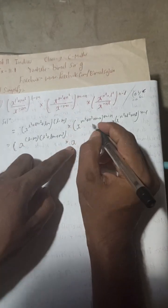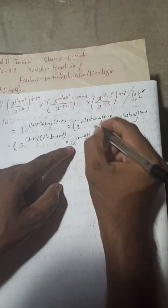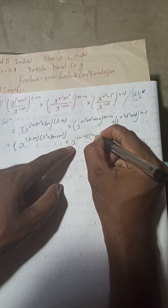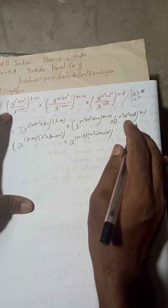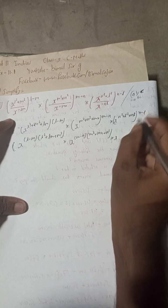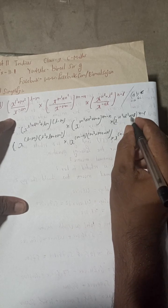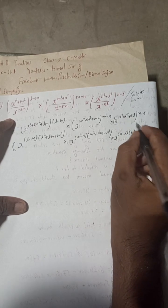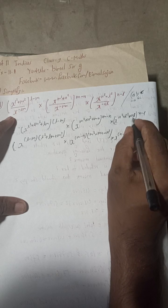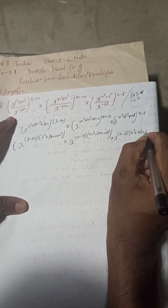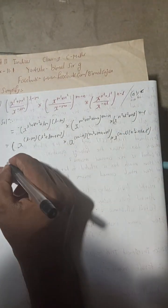So X to the power, writing the first part — this is (M − N) into M² + MN + N², and then the same way the next part is X to the power (N − L) into N² + NL + L². I have already arranged this in the sequence of the formula.